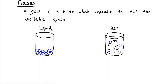A gas is a fluid, much as you think of a liquid as being a fluid. It can flow and have turbulence and other fluid properties. The main difference between a gas and a liquid as a fluid is that a liquid has a fixed volume, whereas a gas can expand to fill whatever volume of container it's been placed in.